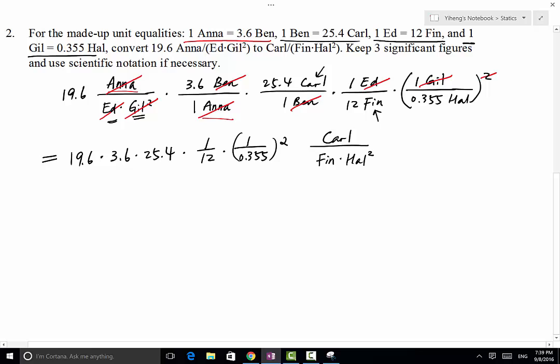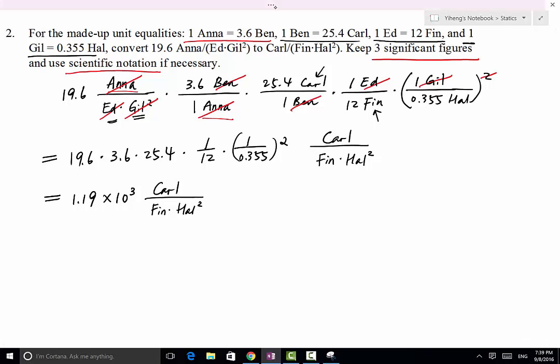And that's what we want. This problem also asks you to keep three significant figures and also use scientific notation if necessary. Our answer is bigger than a thousand, therefore we are going to use scientific notation. This is going to be 1.19, keeping three significant figures, times 10 to the positive third power Carl over Fin Hall squared. So that is the final answer.